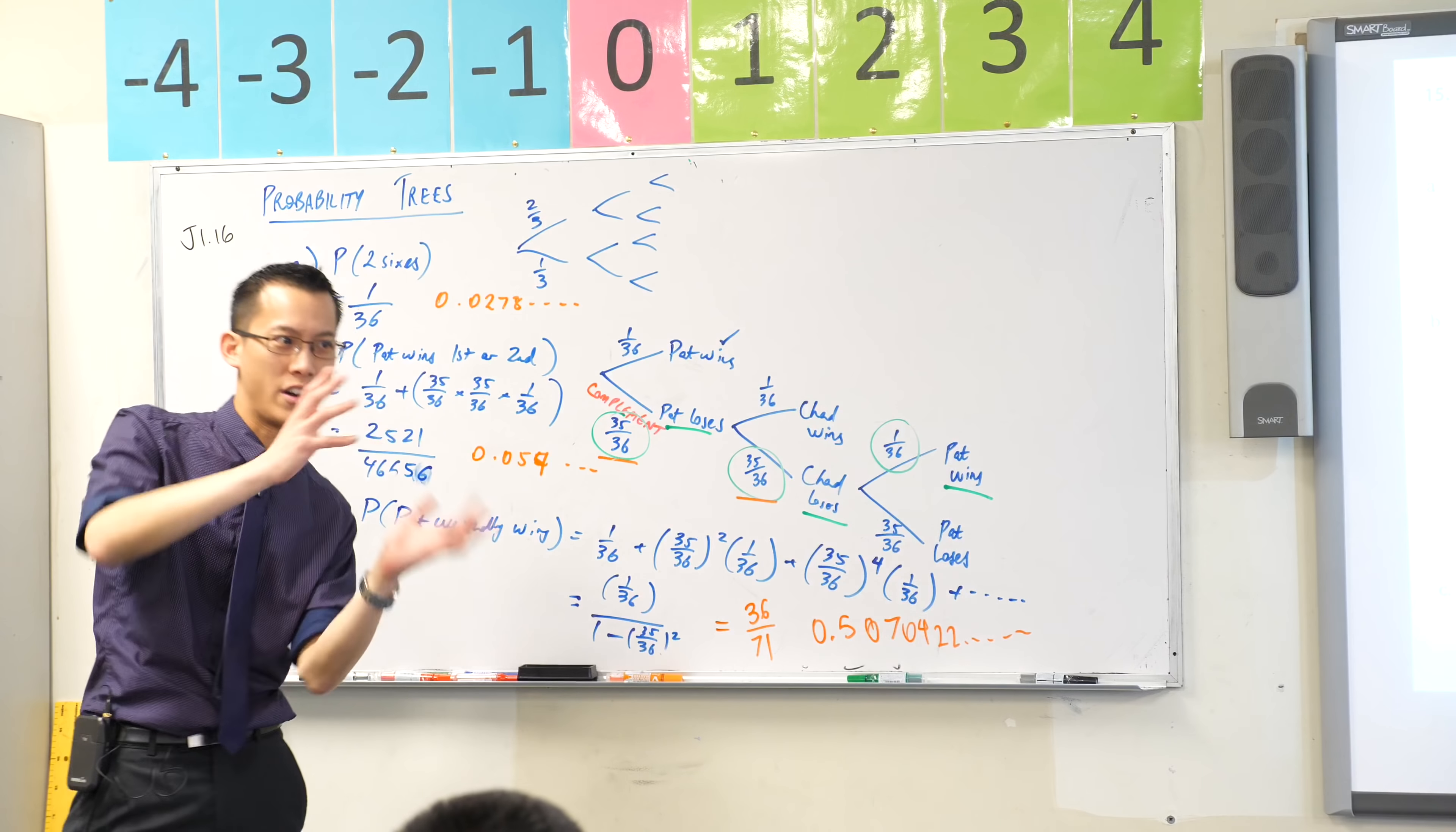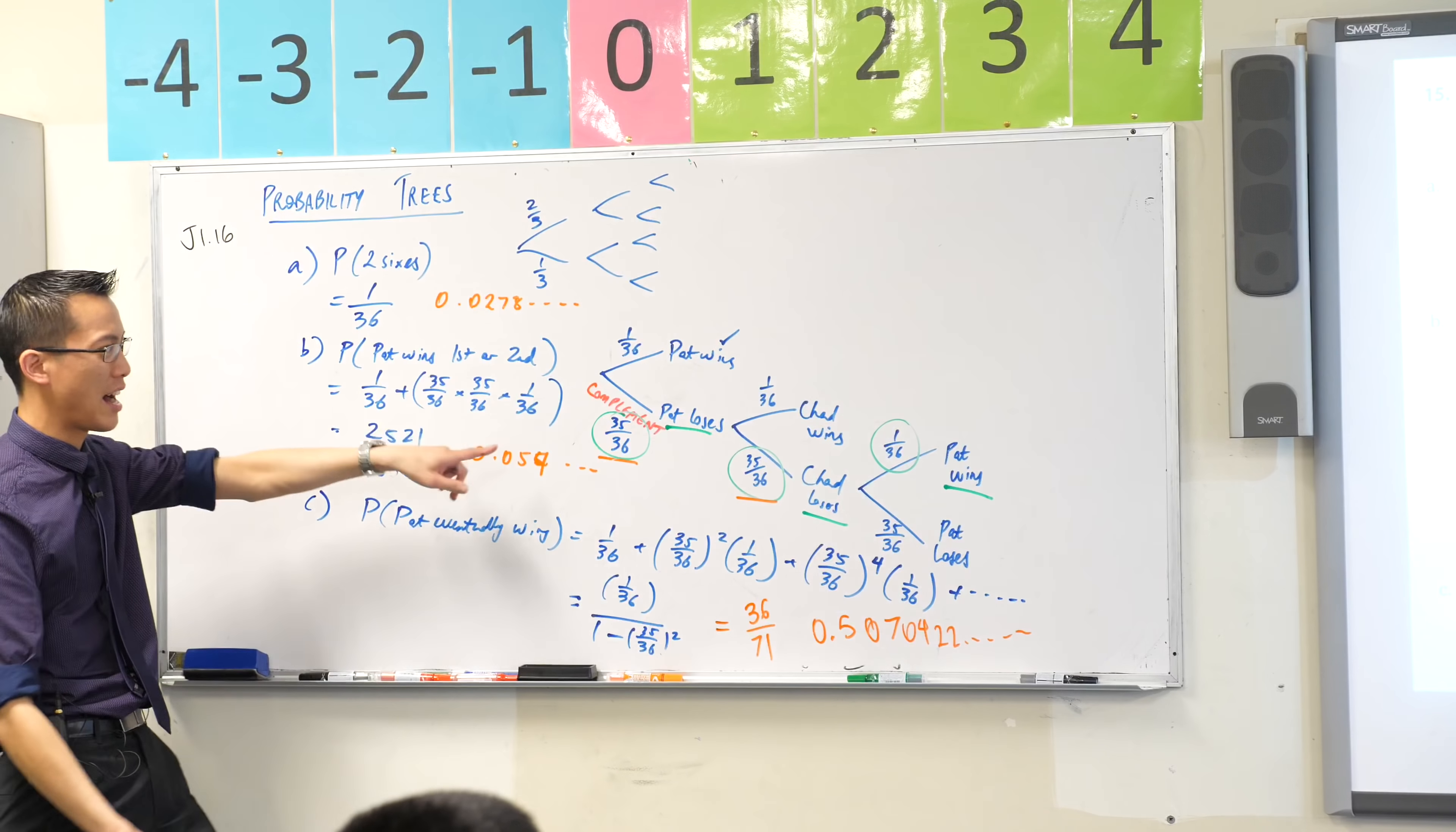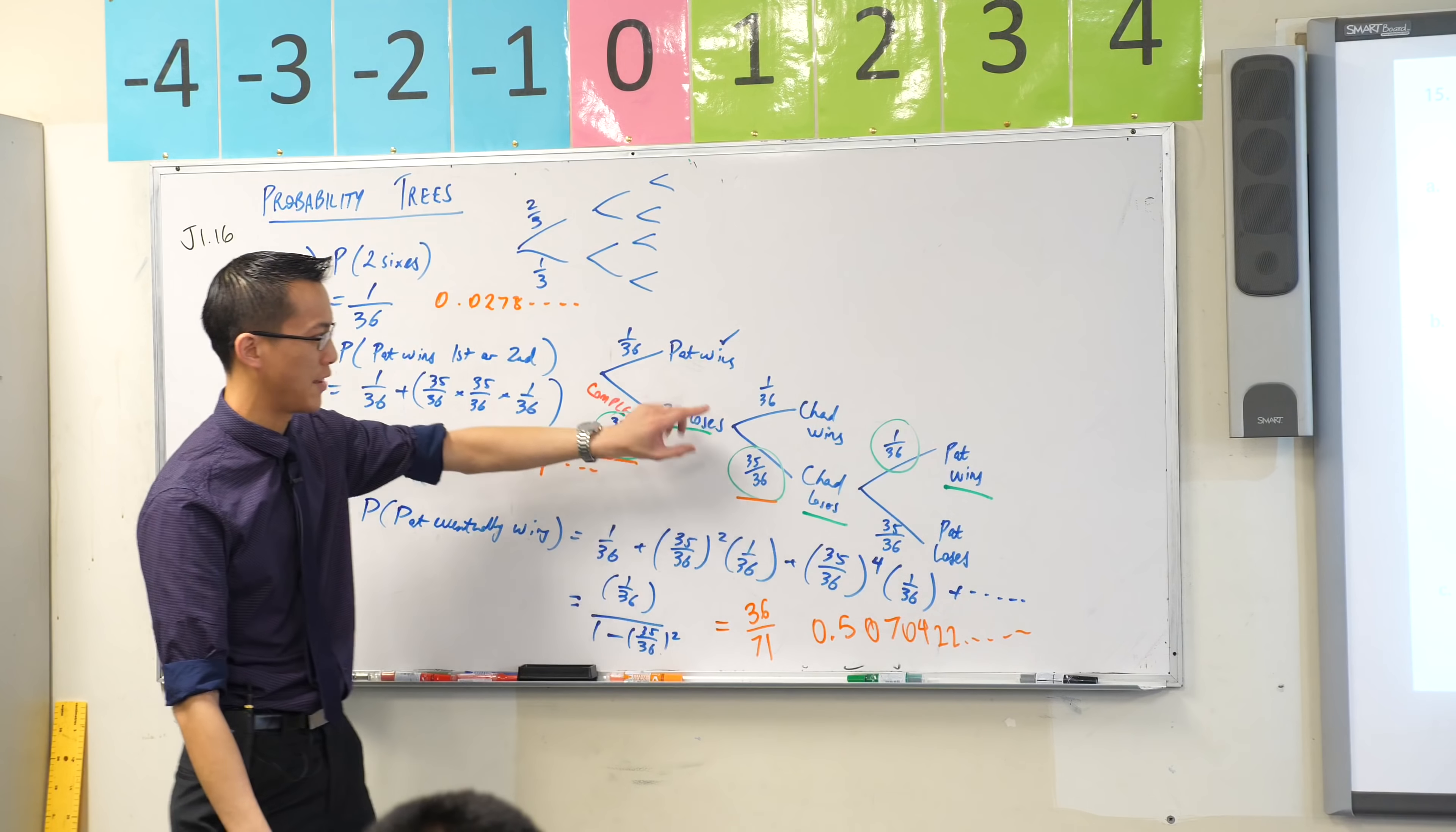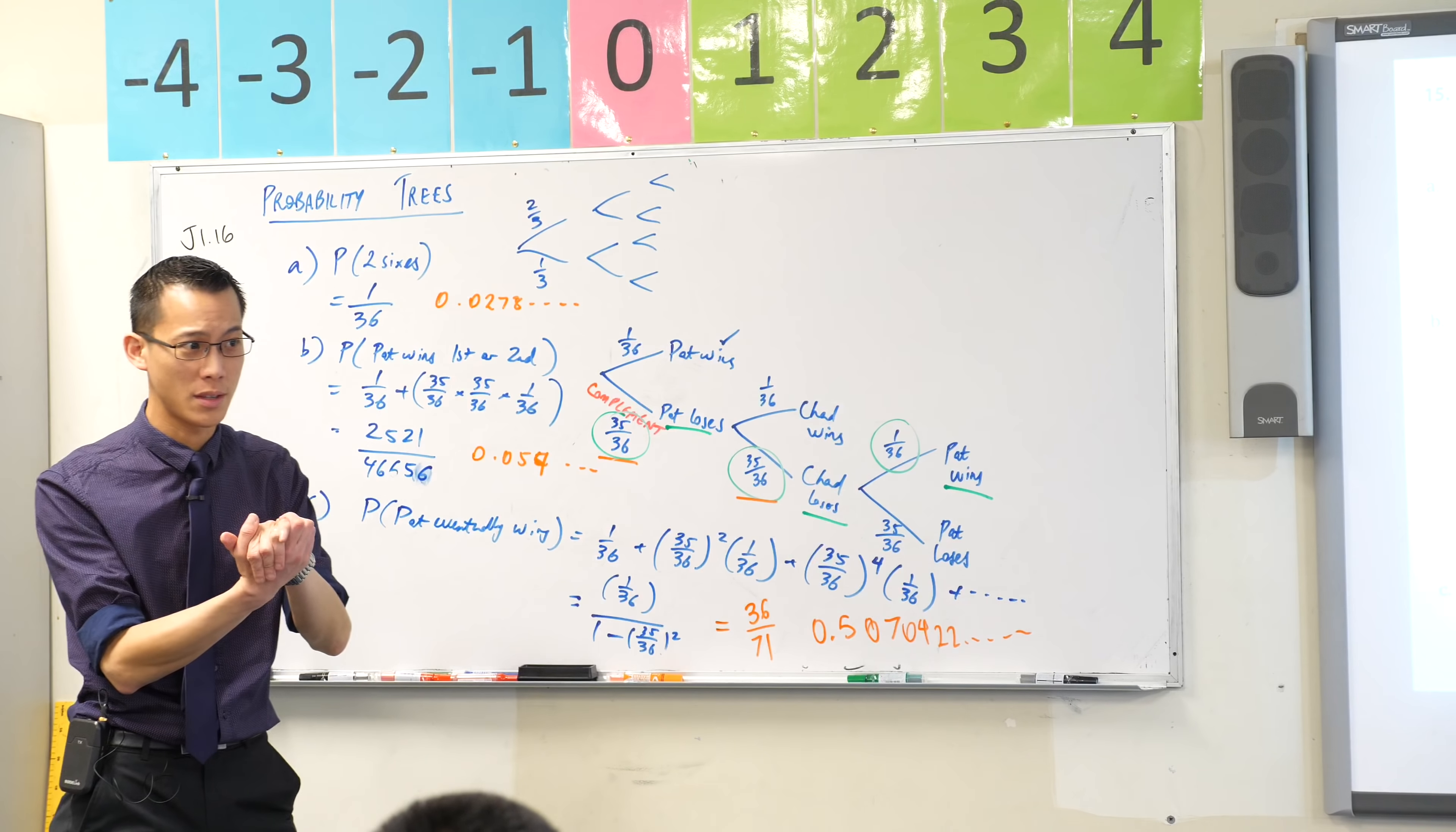So probability trees, you're kind of, I mean, to create this part here, which is sort of what the real question is about, it's pretty difficult to try and string this together without having at least a simple diagram to understand where those probabilities come from. So that's why they can be useful. Okay?